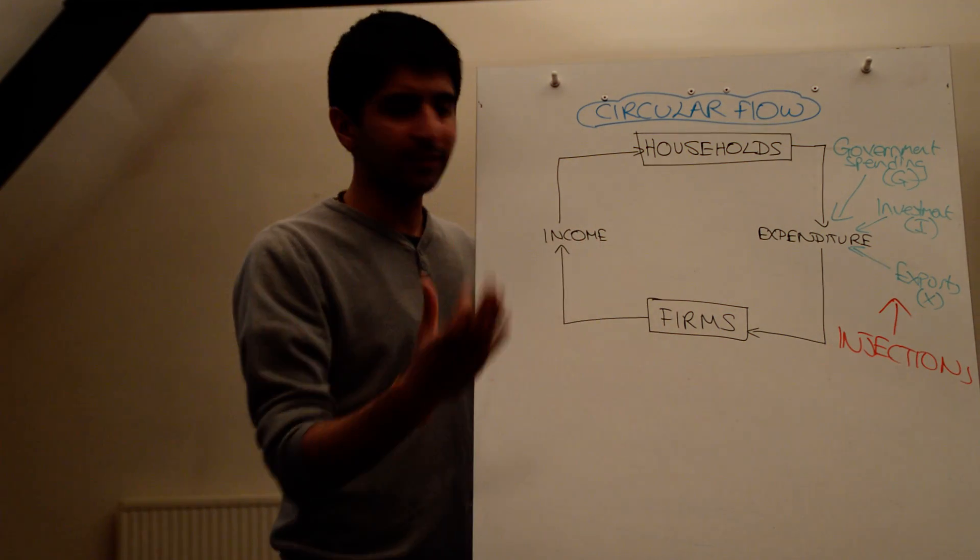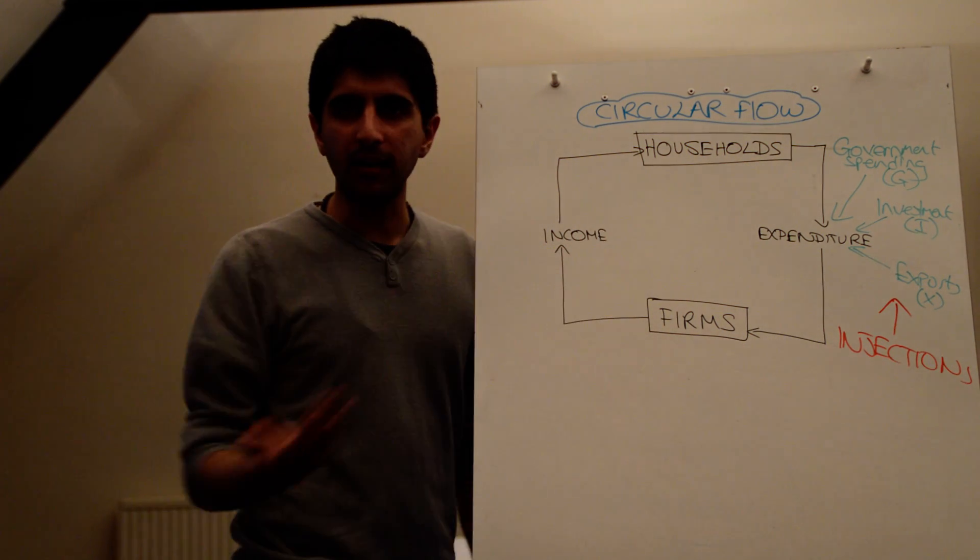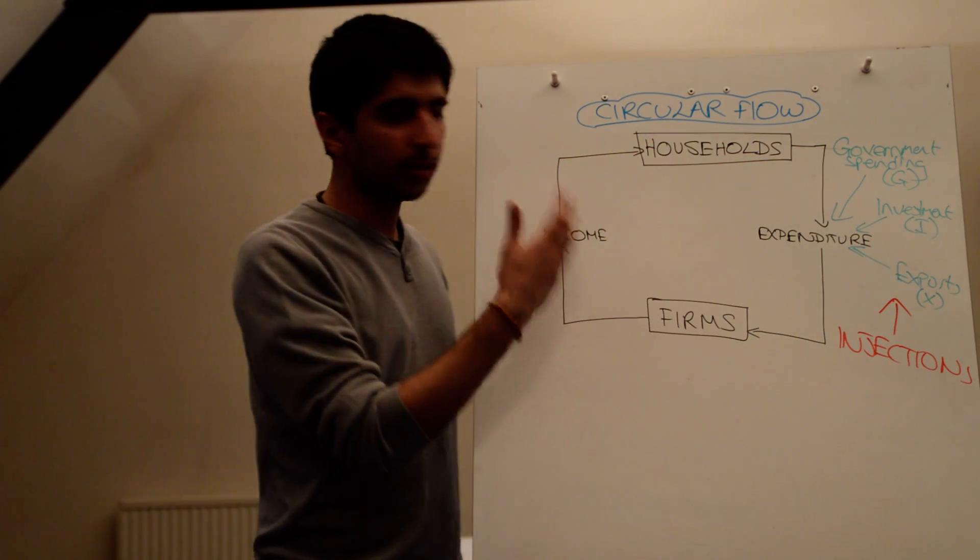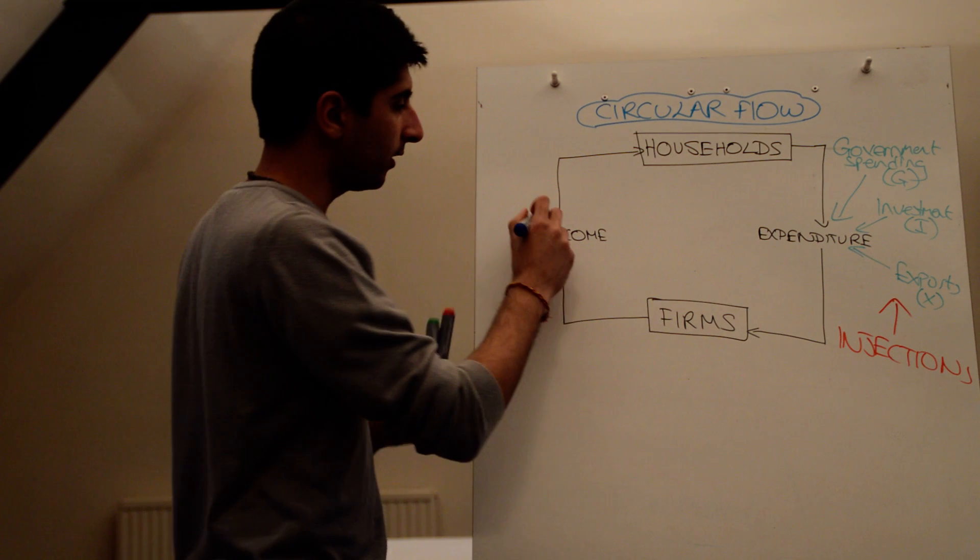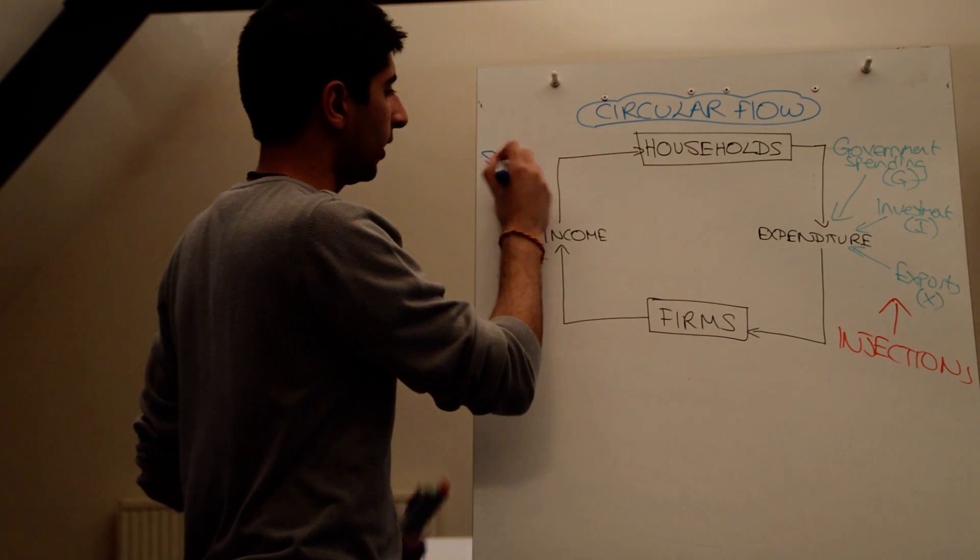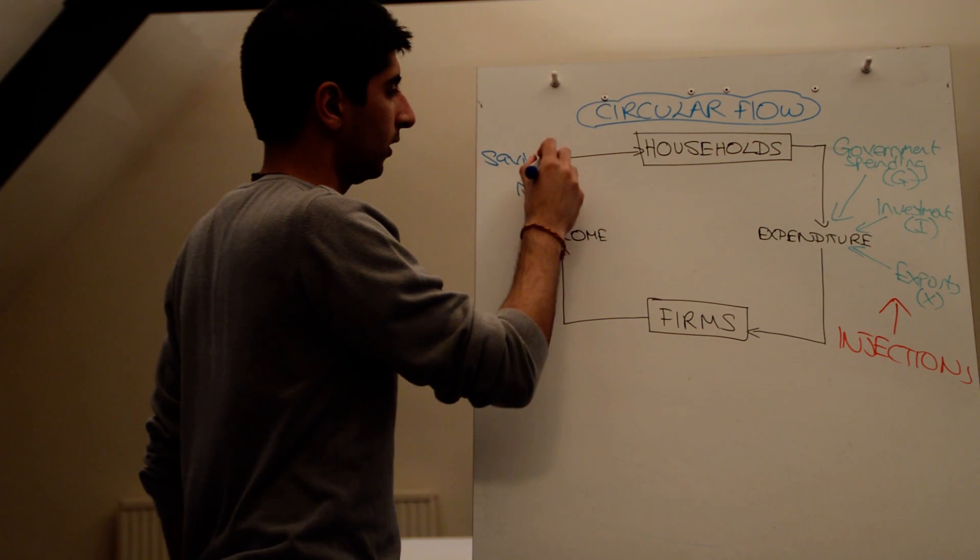But at the same time, we've assumed in this basic model that all of our income is spent. Well, definitely not. Some of it actually leaves the circular flow. Some of it we don't spend. Some of it we save, known as S.